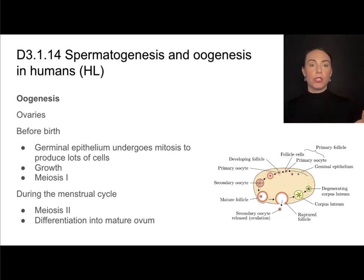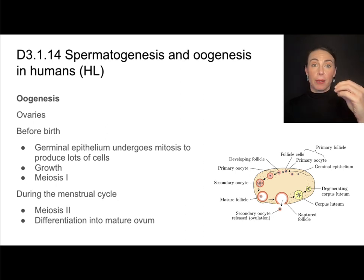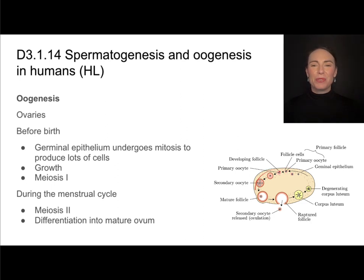It won't do meiosis two until the menstrual cycle, which happens during puberty. So meiosis one occurs before birth, and the rest of oogenesis will resume during puberty. During each menstrual cycle, one of these primary oocytes will be selected to start differentiating — it'll develop a follicle, undergo meiosis two, and eventually differentiate into a mature ovum.